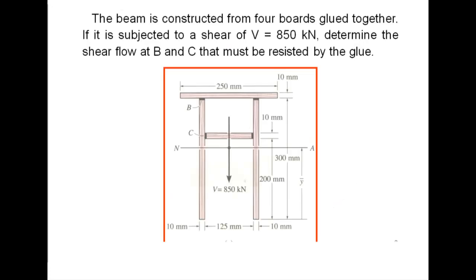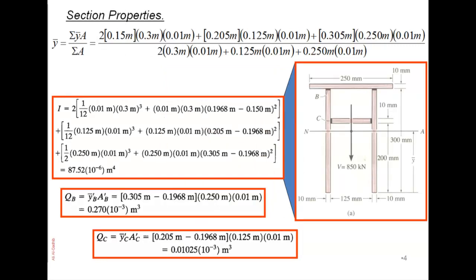Let's look at a problem. You have a beam constructed from four boards glued together, subjected to a shear of 850 kilonewtons. We want to determine the shear flow at B and C that must be resisted by the glue. First, find Y-bar by calculating the product of Y-bar and area for each section, summing them, and dividing by total area — giving approximately Y-bar = 0.1968 meters.